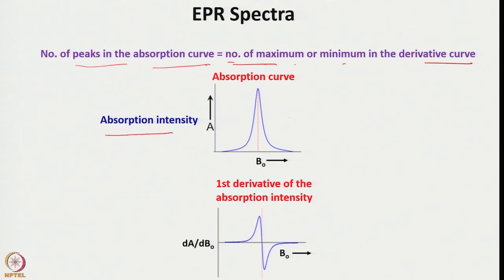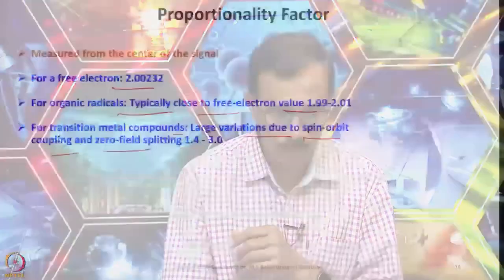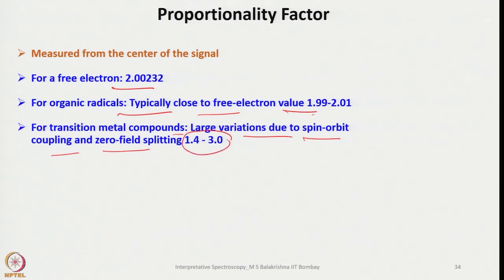The absorption intensity plotted as A versus B₀ gives the absorption curve. The first derivative of the absorption intensity gives the derivative curve, which is what is typically displayed in EPR spectra. The G factor is measured from the center of the signal: for a free electron G = 2.00232, for organic radicals it is between 1.99 and 2.01, and for transition metal compounds the range is 1.4 to 3.0 due to spin-orbit coupling and zero-field splitting.